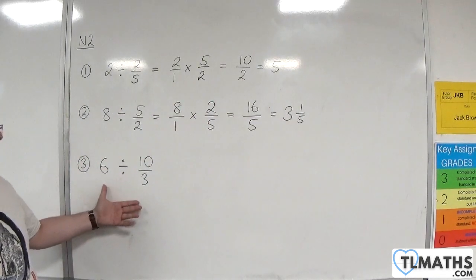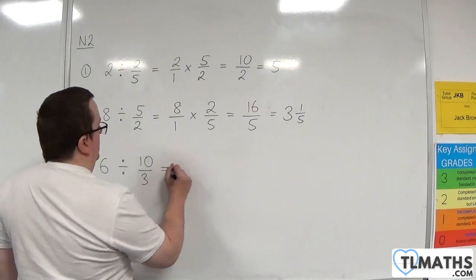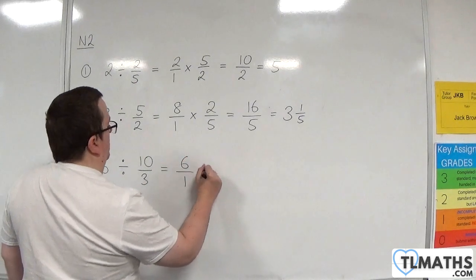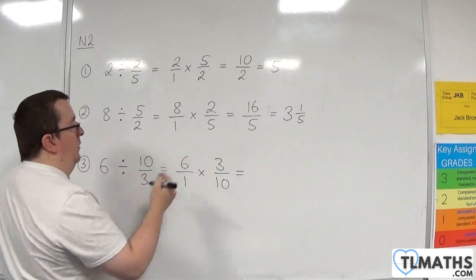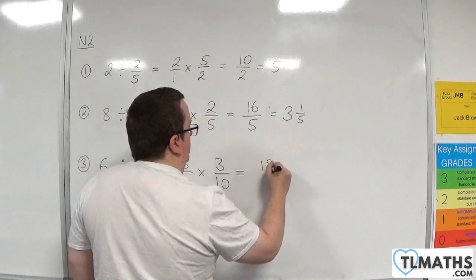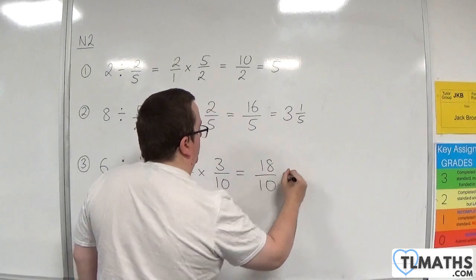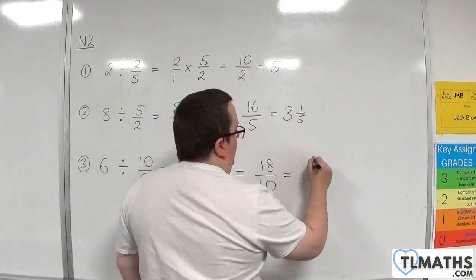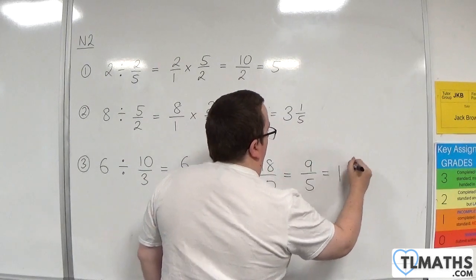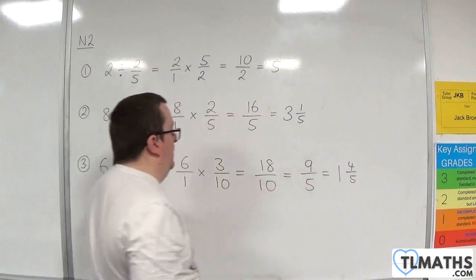Number 3, we've got 6 divided by 10 thirds. Write that as 6 over 1 times 3 over 10. 6 times 3 is 18, 1 times 10 is 10. Then you can divide top and bottom by 2, so we'll get 9 over 5, which is 1 and 4 fifths as a mixed number.